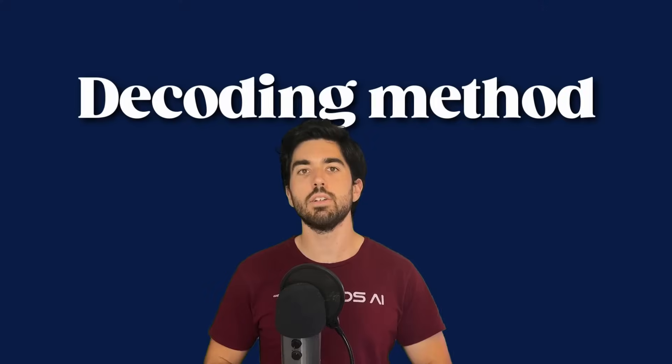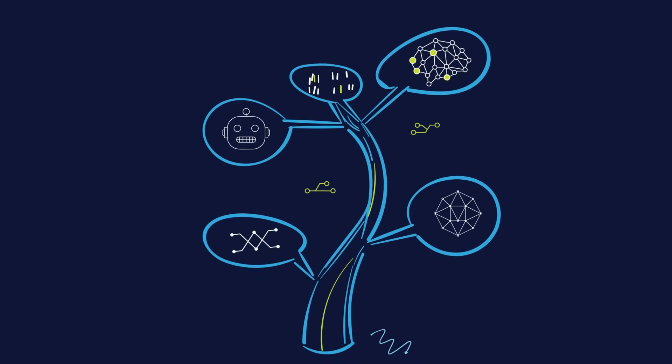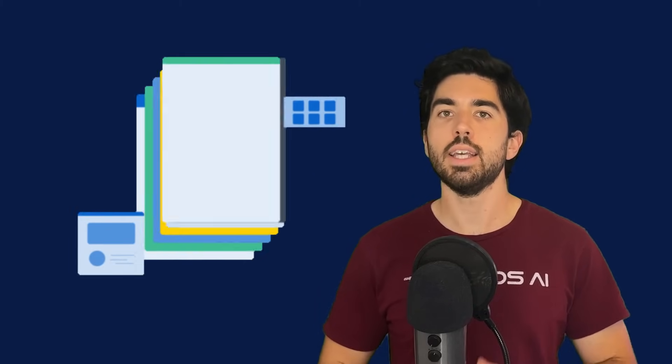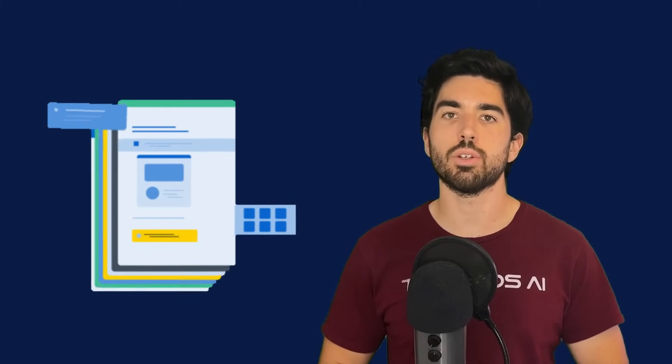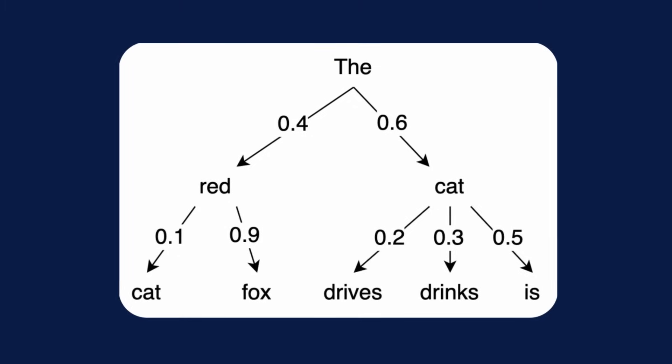Aside from these parameters, decoding methods are fundamental strategies used by LLMs to generate text, and each method has its unique advantages and limitations. At each decoding step, the LLM gives a score to each vocabulary token, where a high score relates to a high probability of that token being next, according to patterns learned during training. However, is the token with the highest probability always the best choice? By predicting the best token at step 1, the model may find only low-probability tokens at step 2, resulting in a low joint probability of the two consecutive tokens.